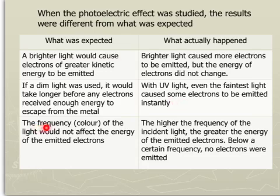Third one. The frequency, and therefore color of the light, would not affect the energy of the emitted electrons. But what actually happened was, the higher the frequency of the incoming light, or incident light, the greater the energy of the emitted electrons. Below a certain frequency, no electrons were emitted, so there's a minimum frequency that we should have for emitting electrons.